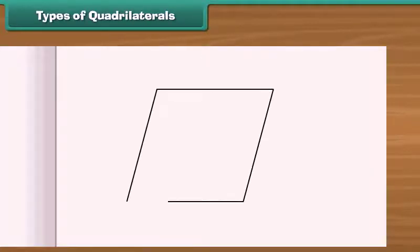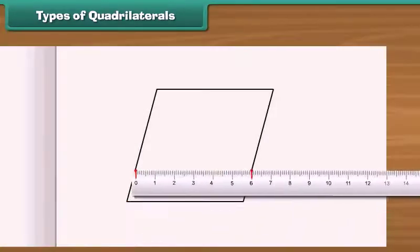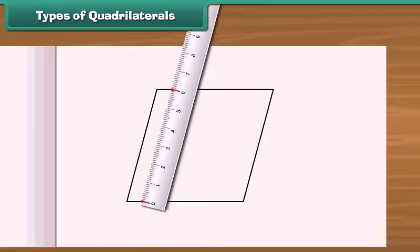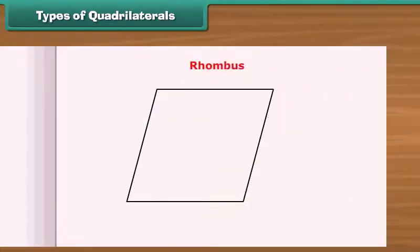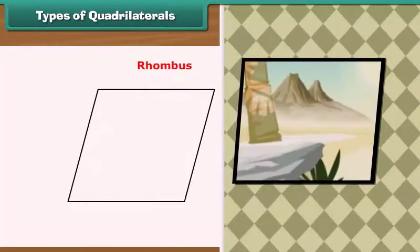A quadrilateral having opposite sides parallel is called a parallelogram. A parallelogram in which all four sides have the same length is called a rhombus. Look at this painting. This is a rhombus.